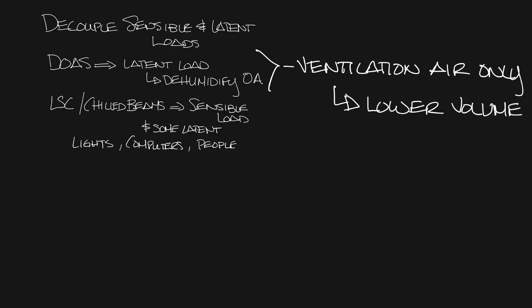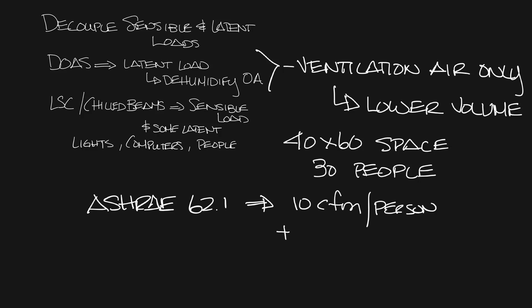So let's look at this. Let's say you have a 40 by 60 space and you have 30 people in it. ASHRAE 62.1 says that you need to bring in ventilation air based on this calculation, which for this, we'll call it a classroom, is 10 CFM per person plus 0.12 CFM per square foot. That comes up to 588 CFM.